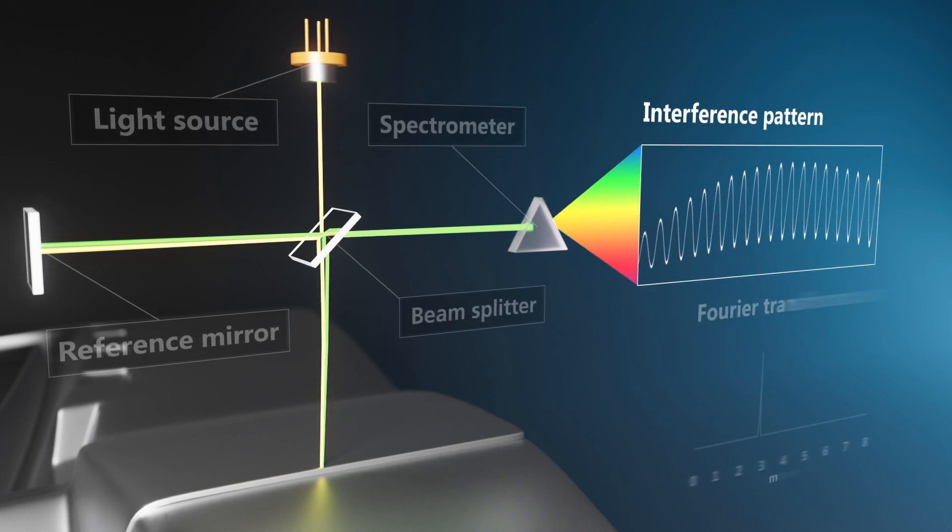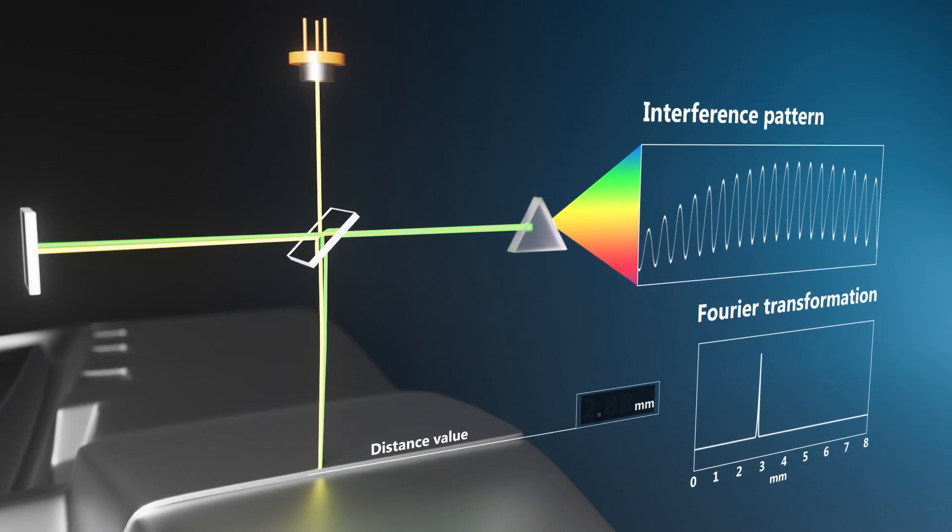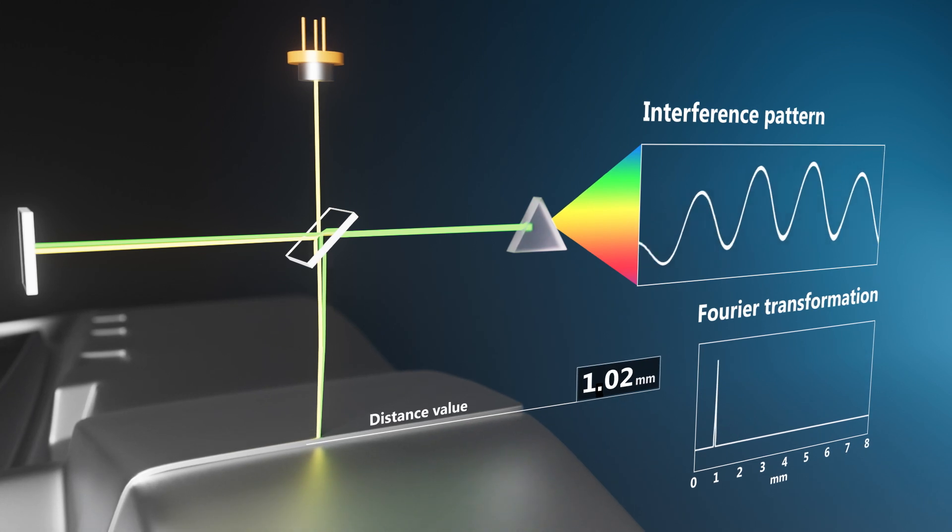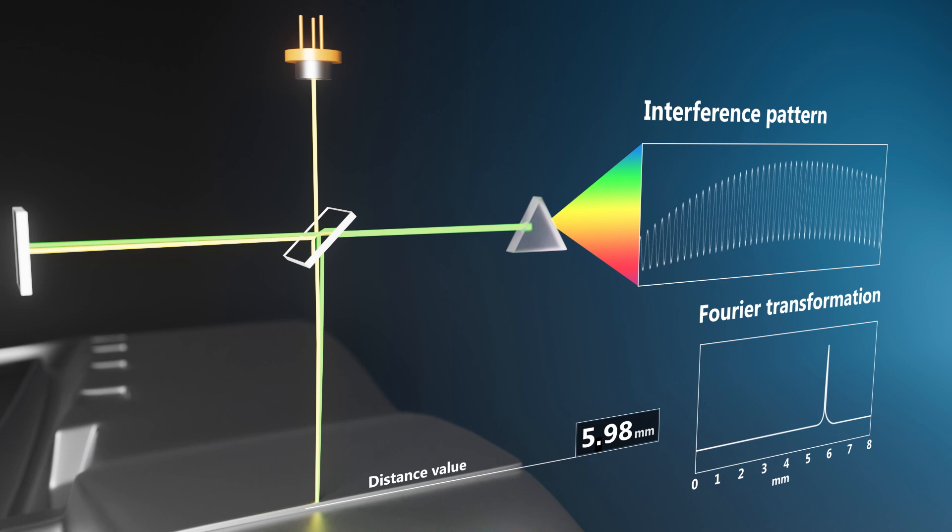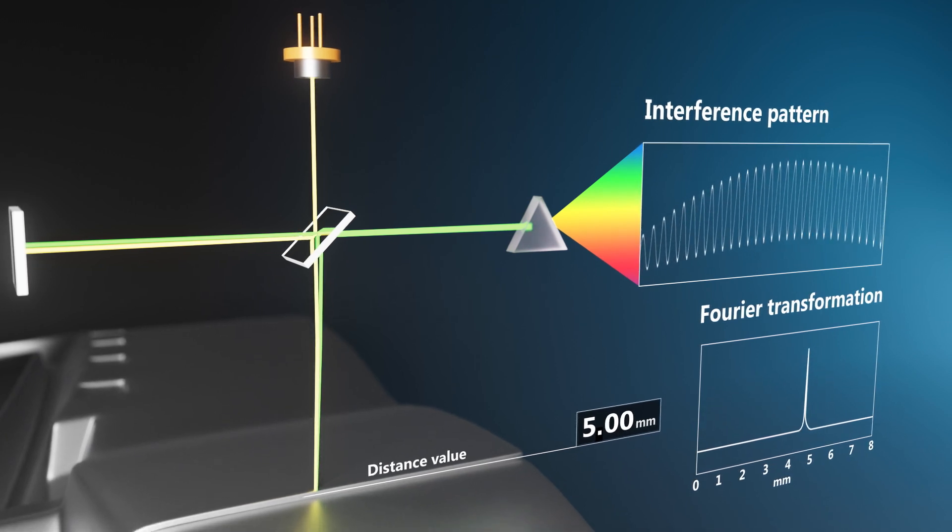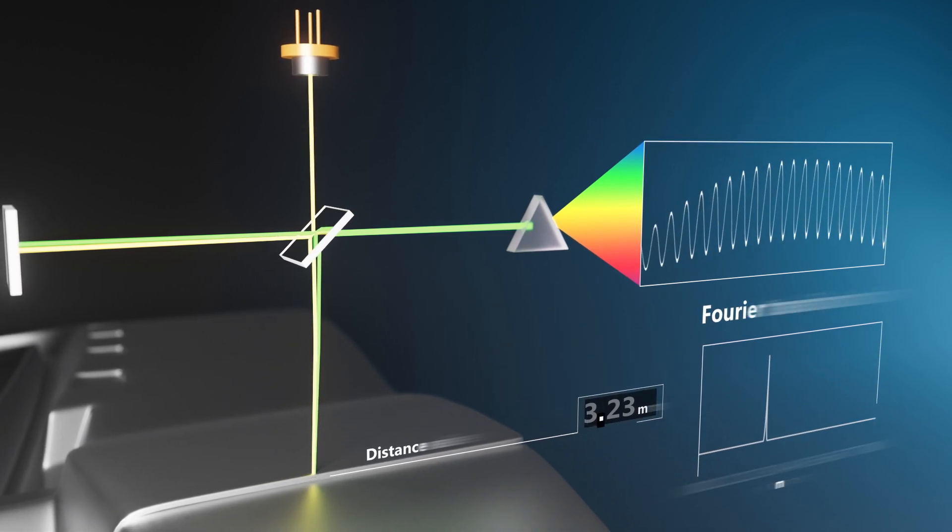The reflected light in both paths combines to form an interference pattern that is analyzed by the spectrometer, providing a precise distance signal with micrometer resolution and tens of thousands of measurements per second.